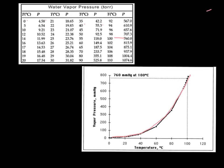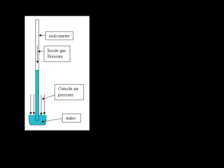Anytime you want to find the vapor pressure of water, you just look in a table — the tables are everywhere. Early in the year, we read the volume of a eudiometer, or a gas-collecting tube. You're very shortly going to do a lab where you do a reaction in a eudiometer. What you're going to have is a rubber stopper here, and you're going to put a little coil of magnesium. There's going to be some hydrochloric acid in here. The magnesium reacts with the hydrochloric acid in a single replacement reaction to make magnesium chloride and hydrogen gas.